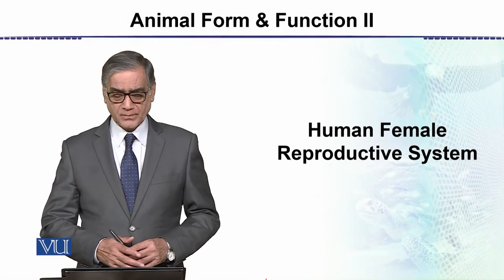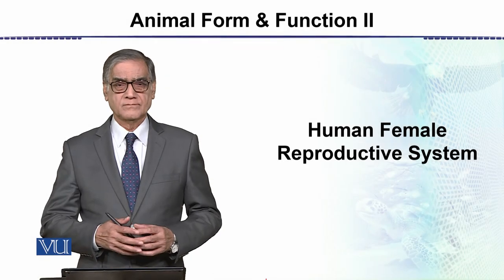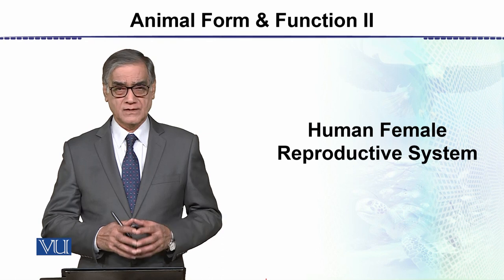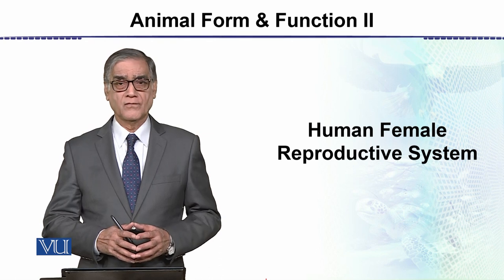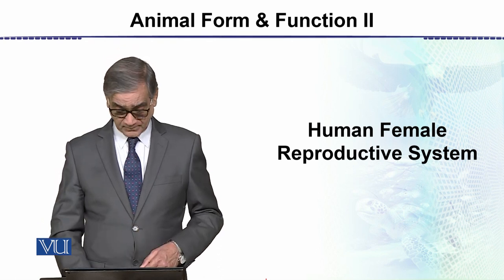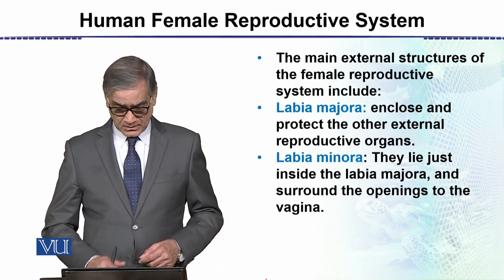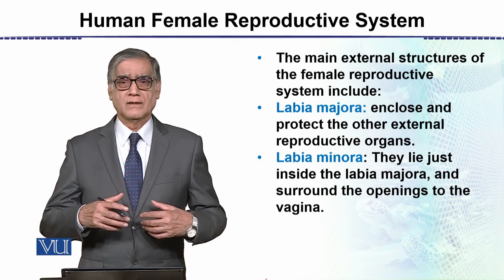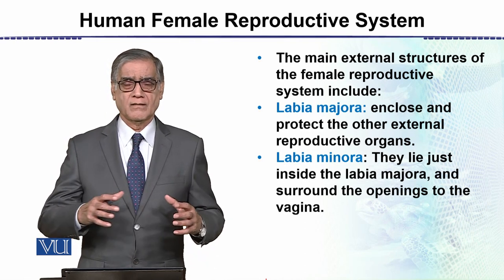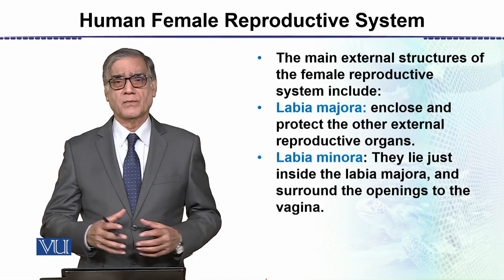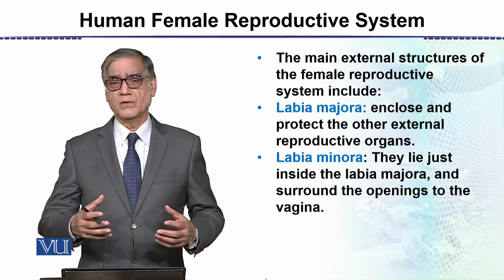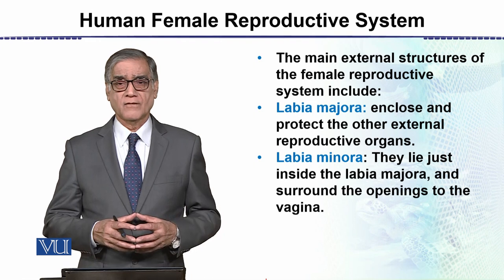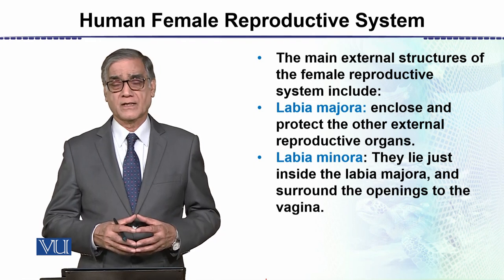The next topic is the Human Reproductive System — specifically the Human Female Reproductive System. Now that we have completed the Male Reproductive System, we are going to start the Female Reproductive System.